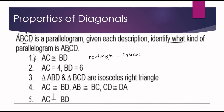Number two: AC = 4 and BD = 6. AC and BD are both diagonals. Since AC is 4 and BD is 6, they are not congruent. Therefore, based on description number two, parallelogram ABCD is a rhombus.